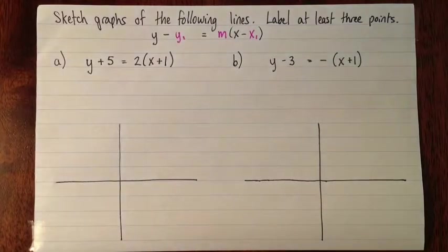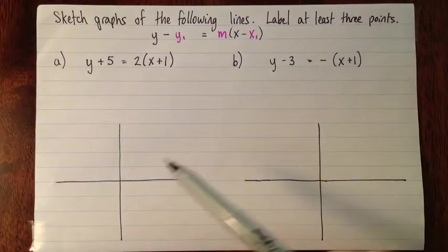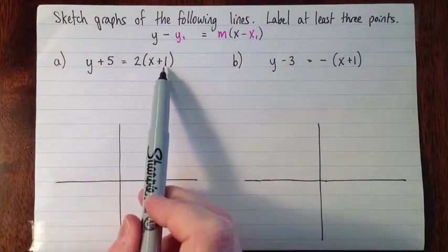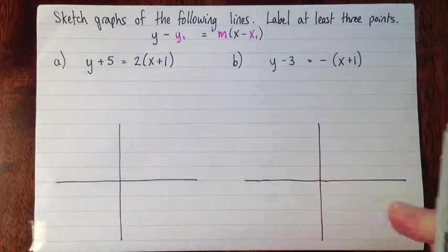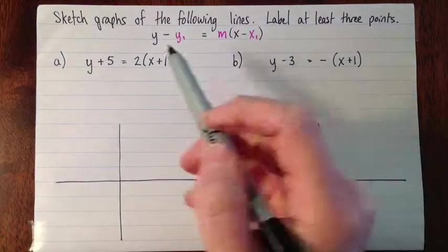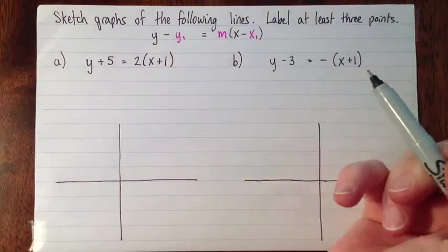Okay, so here are a couple examples. We're supposed to sketch the graphs of the following lines and label at least three points. So we have y + 5 = 2(x + 1), and y - 3 = -(x + 1). So in both of these cases, the equations are written in slope point form.